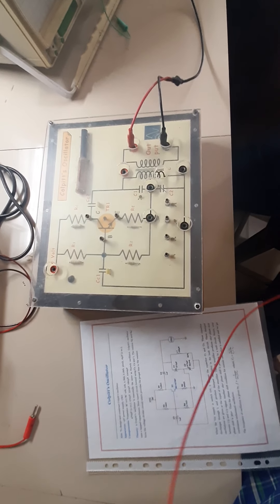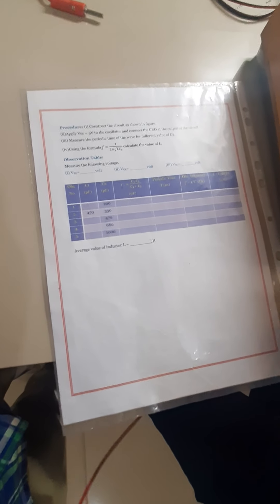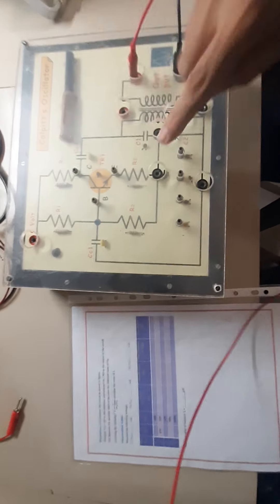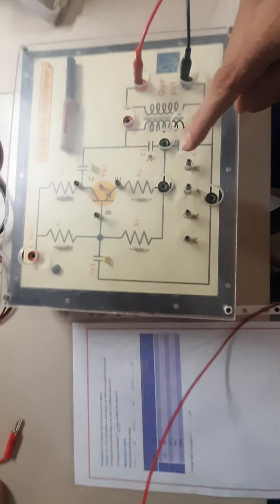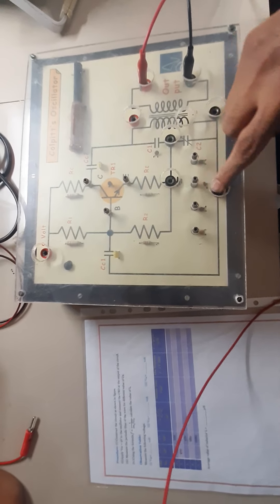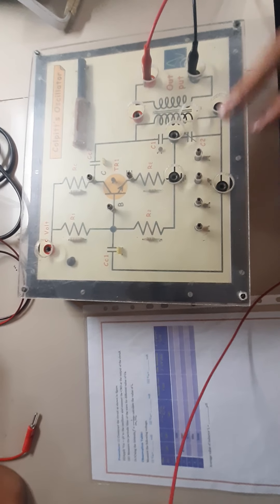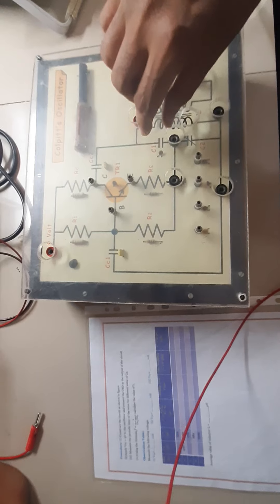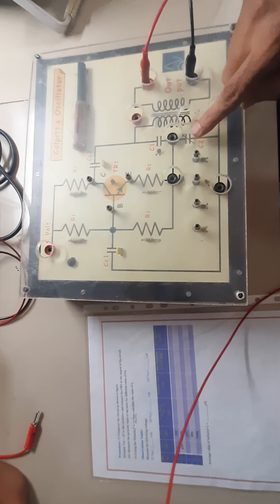Now we have to change different values of the capacitor here. In this board, one is the fixed capacitor — 470 picofarad — and we have to change the second capacitor by connecting here at this terminal. So this is your capacitor C2 and this is your C1. C1 is fixed; C2 is variable.